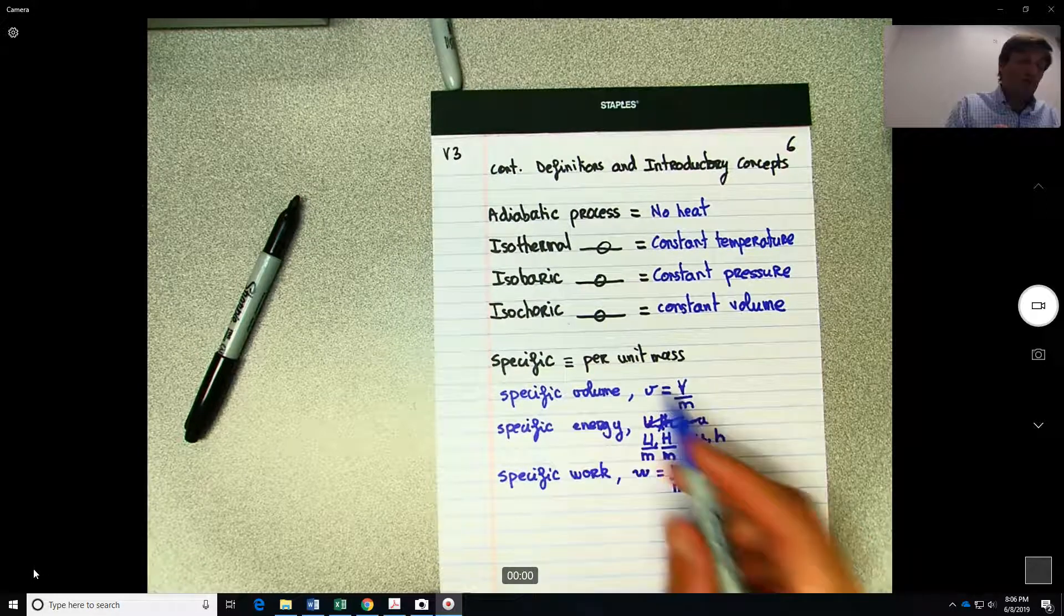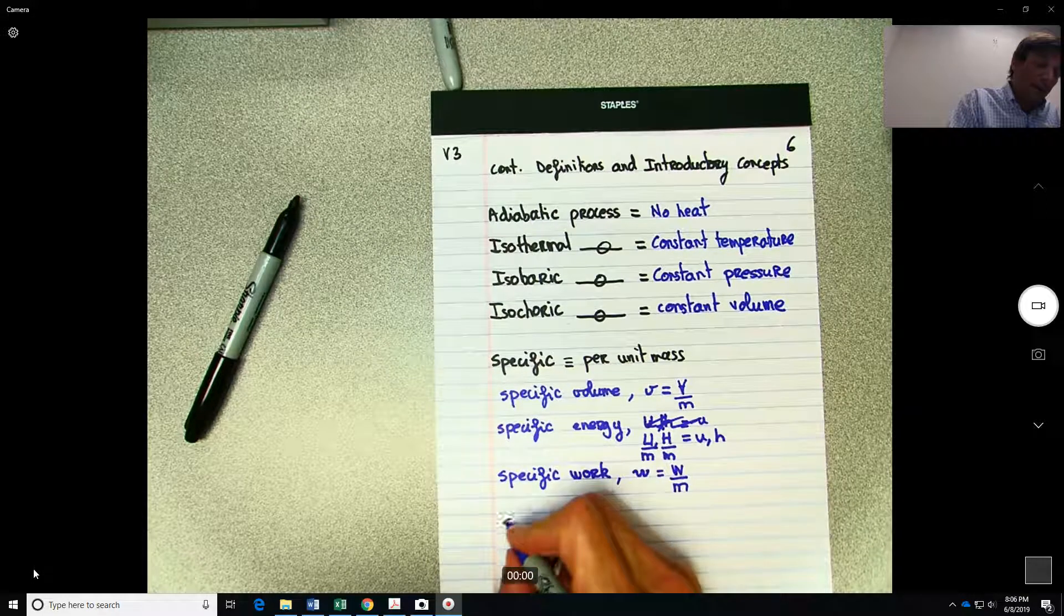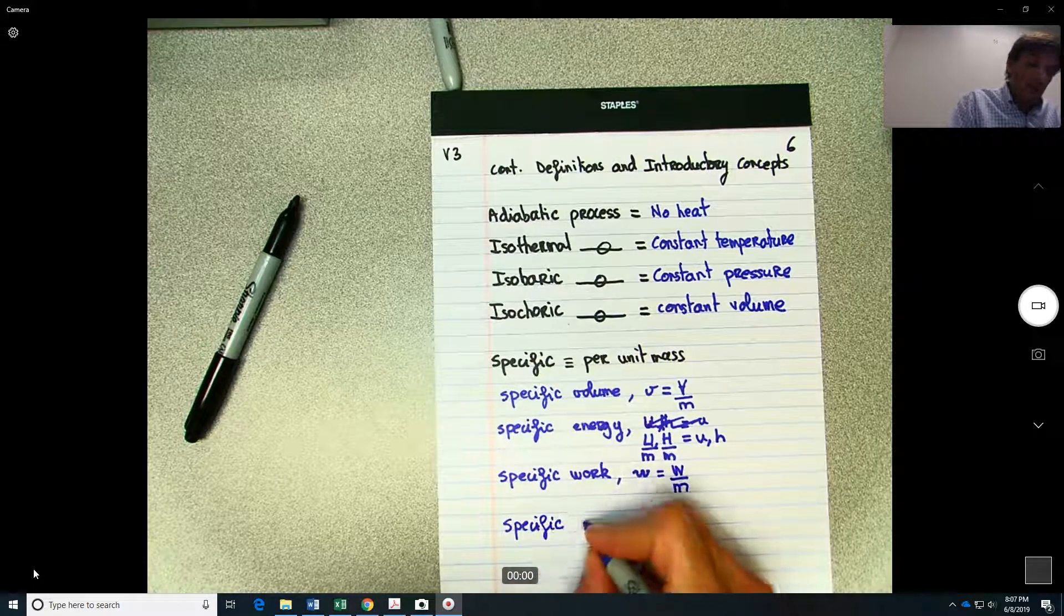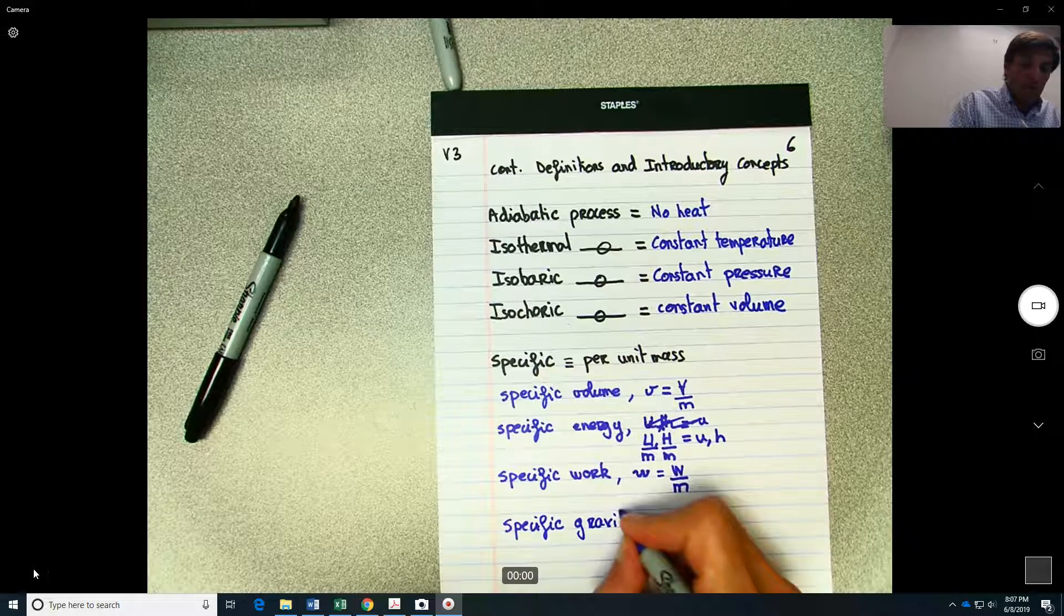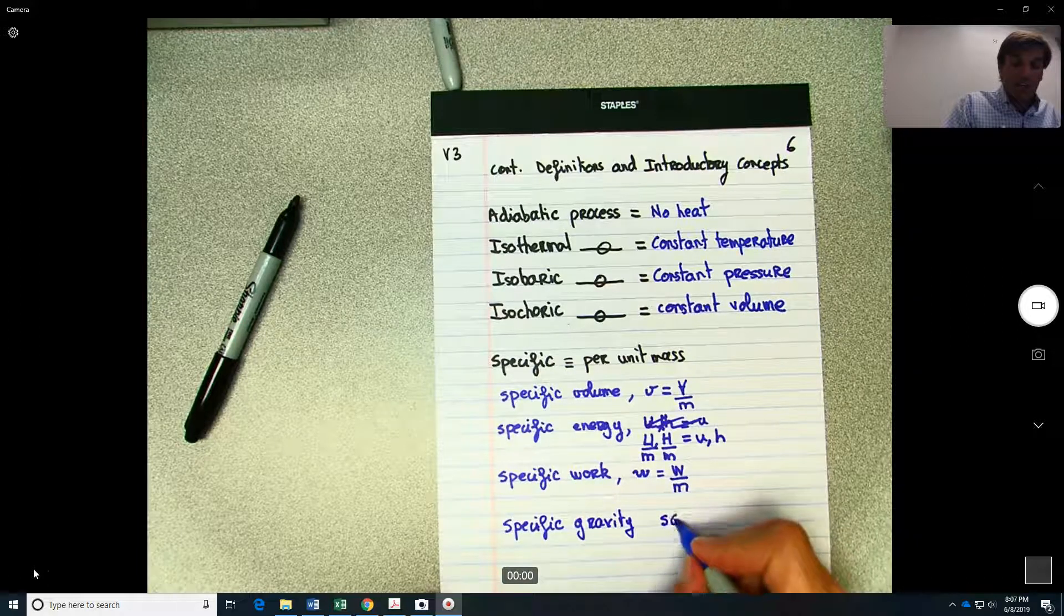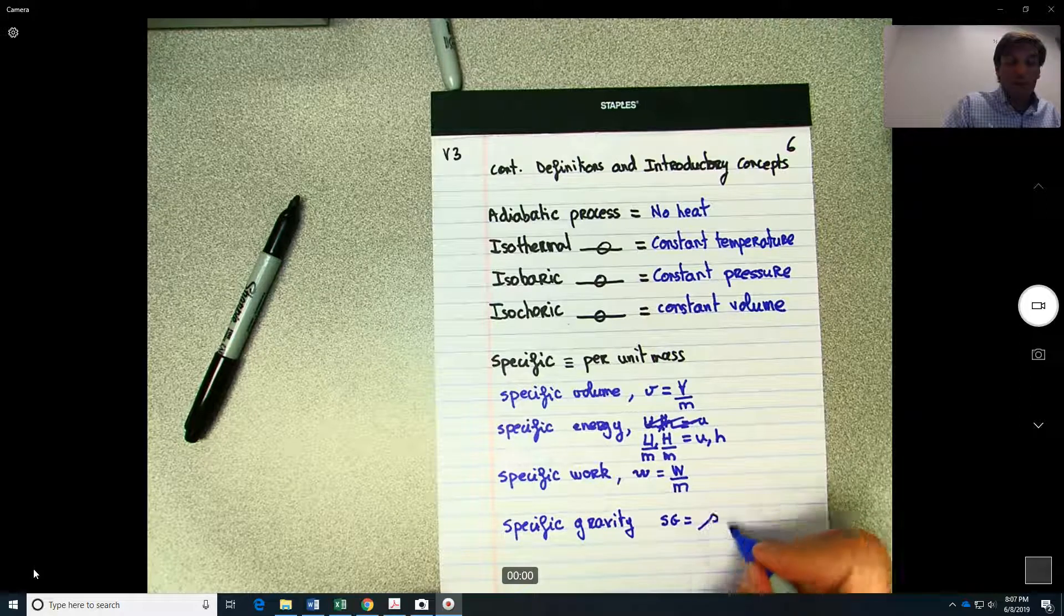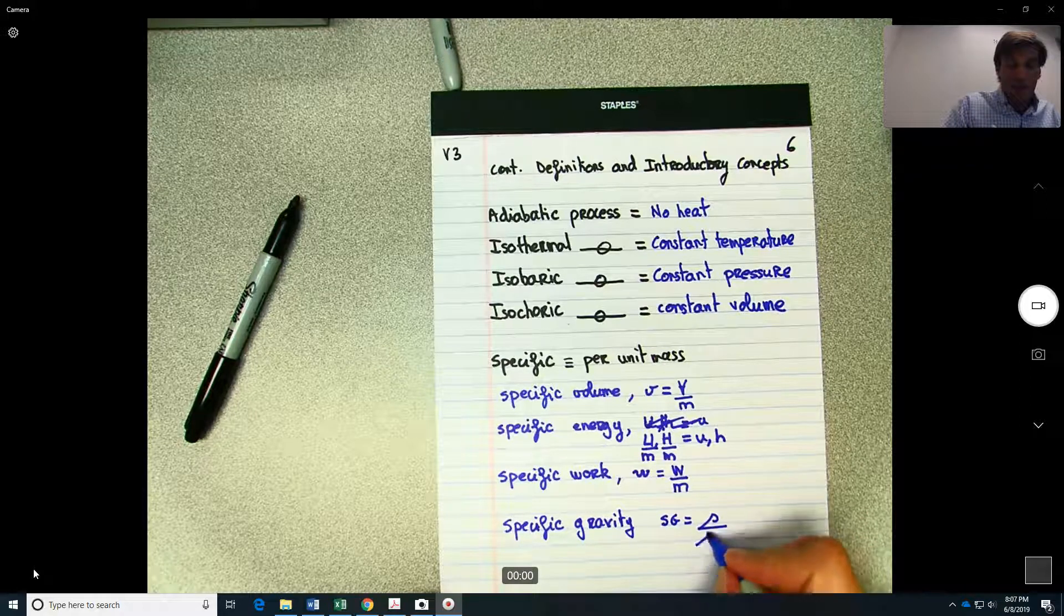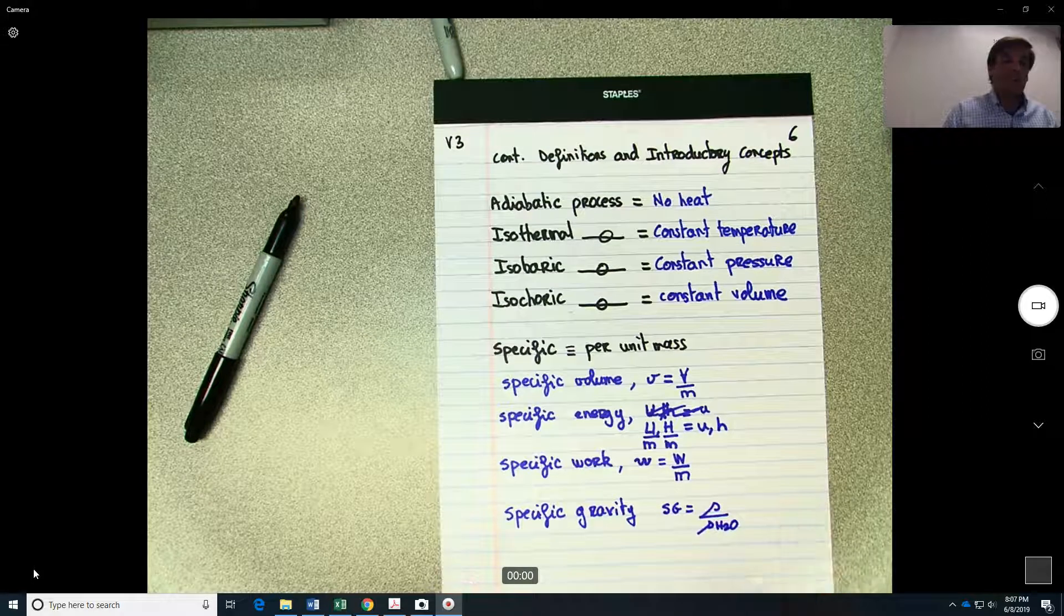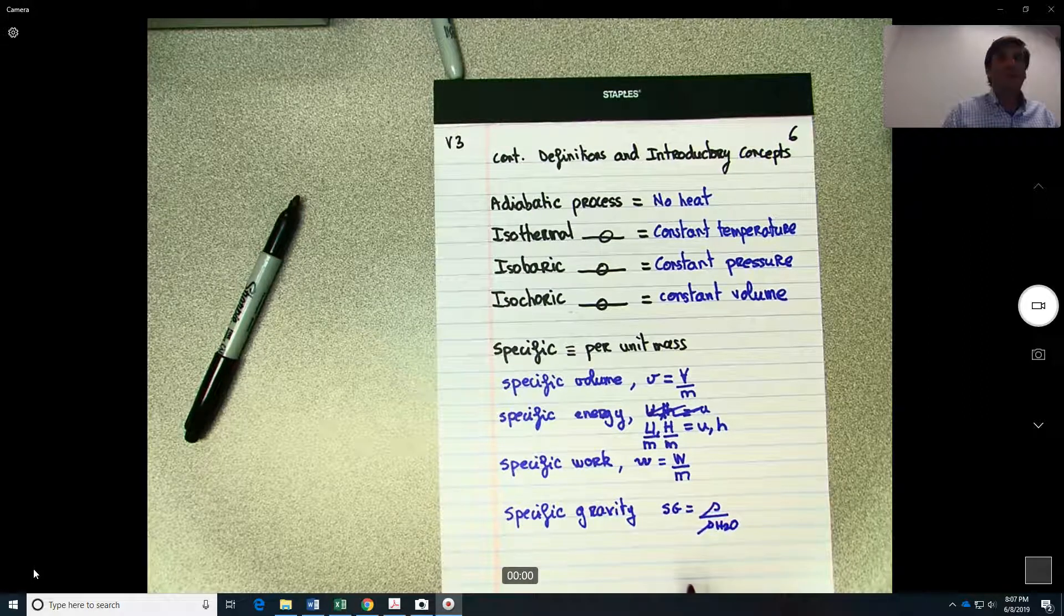And then the two exceptions of this rule would be the specific gravity, which basically is just defined as SG. SG is basically the density, and you will be referring it to the density of the water.